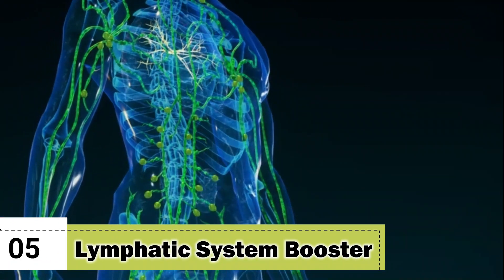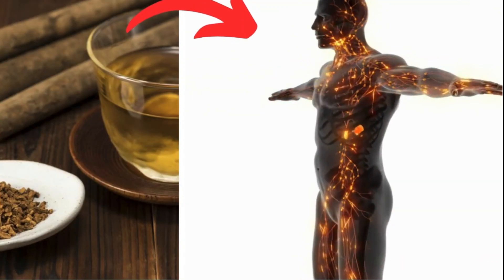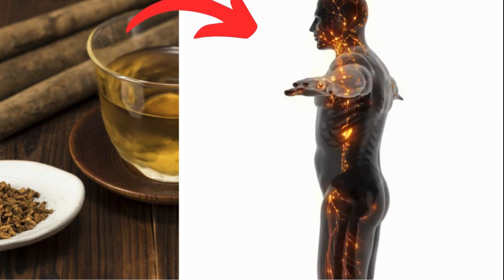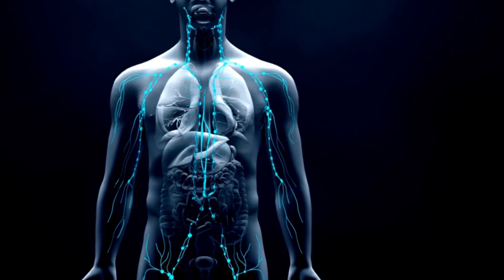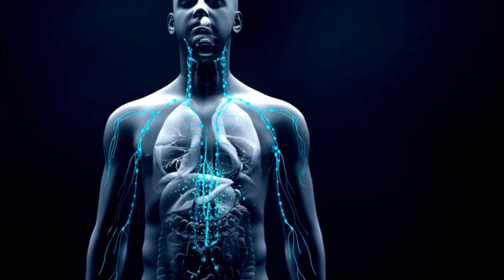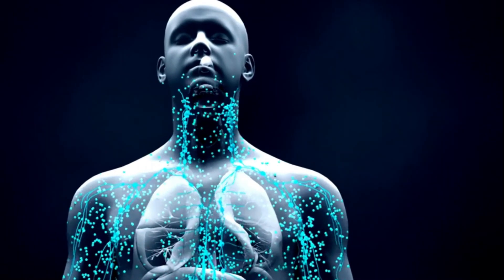5. Lymphatic System Booster. Burdock root boosts your lymphatic system, the body's internal cleanup crew, ensuring waste and toxins don't stand a chance. It's like having a dedicated team ensuring everything unwanted is efficiently escorted out, keeping your immune defense strong and responsive.